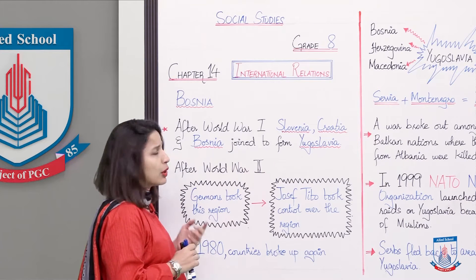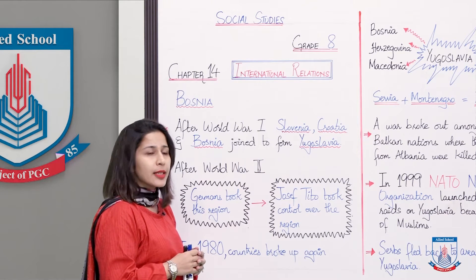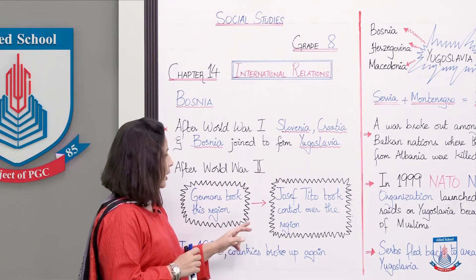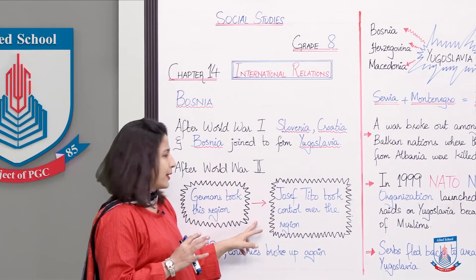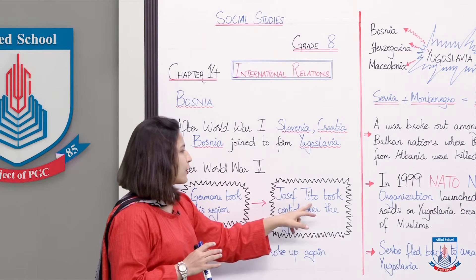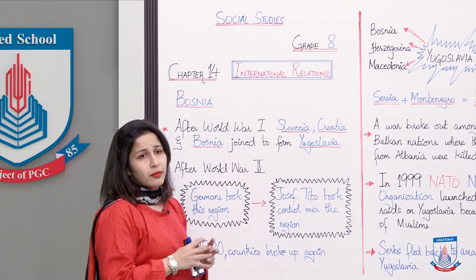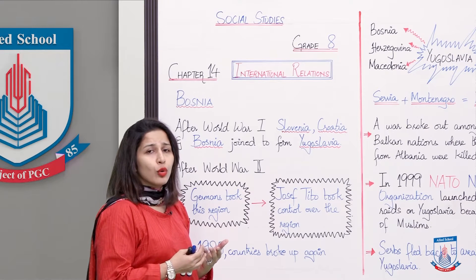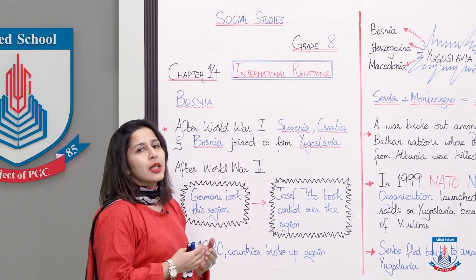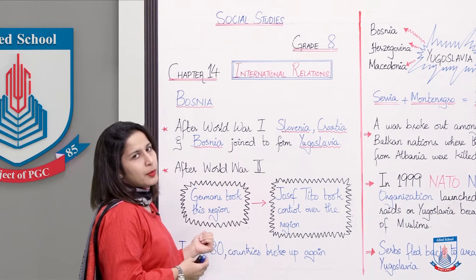After World War II, since Germany was one of the allies, Germany took this region. But there was an uprising. There was a communist leader whose name was Joseph Tito. He took control over the region from Germany.